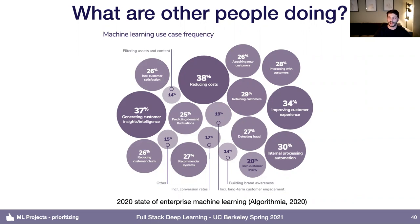One interesting thing from that Algorithmia report is how low all the numbers are — the largest is about 38%. So the overall penetration of machine learning is pretty low, which is interesting. The categories people are working on are interesting too: a lot around reducing costs, which is probably mostly eliminating manual work around things like document review; generating customer insights like predicting churn; improving customer experience — the most exciting category for actually building better products; and internal process automation.